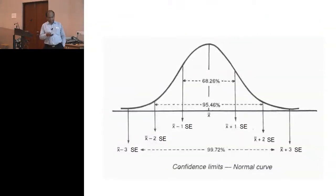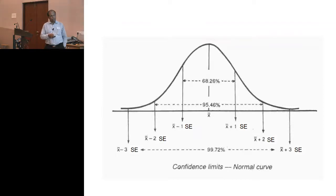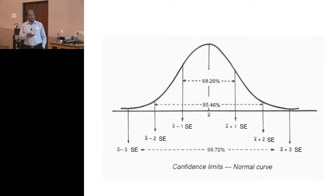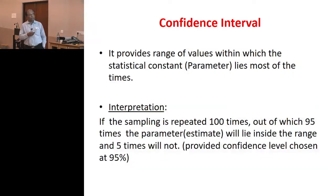Let me explain this in the normal distribution process. This is your sensitivity or specificity. Plus or minus one standard error from the sensitivity covers 68% of the area. Plus or minus two standard errors covers 95% of the area. This is basically what the confidence interval means.